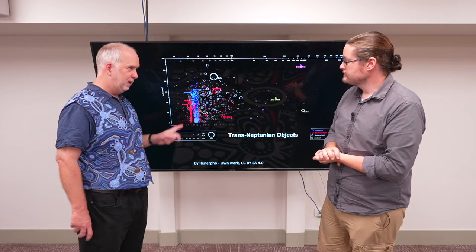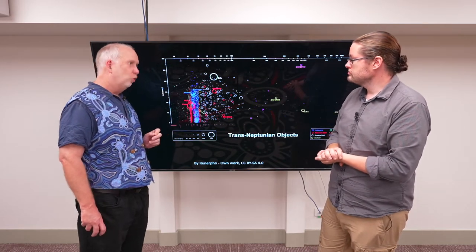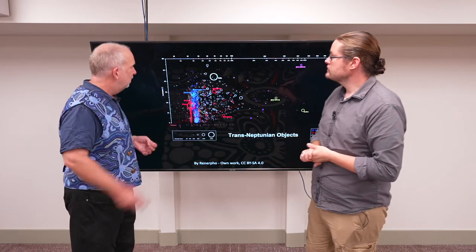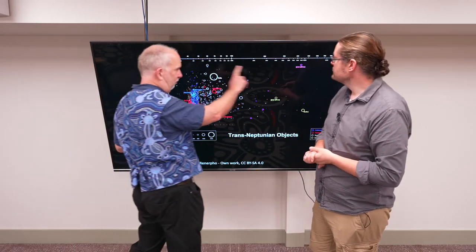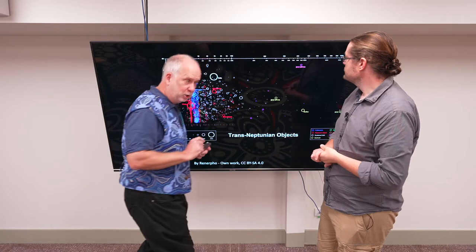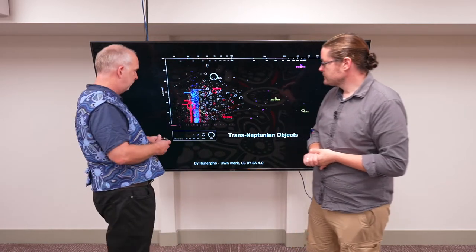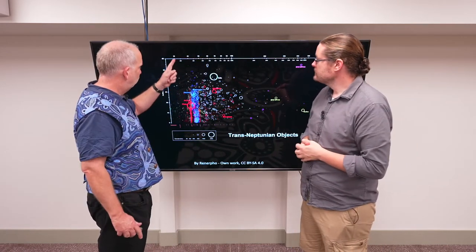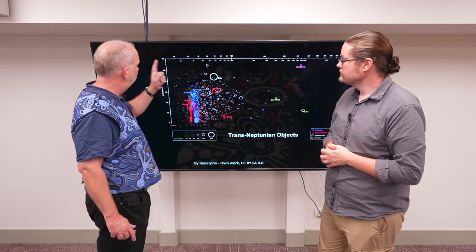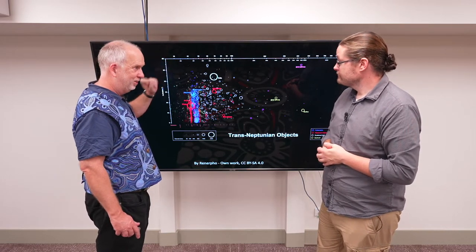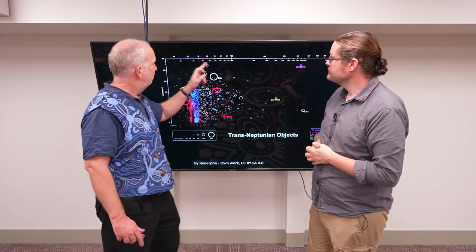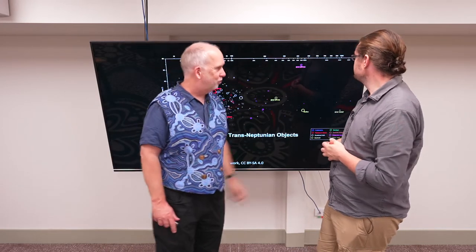Each circle here is a currently known Kuiper belt object, trans-Neptunian object. On this axis we're plotting how far out they are from the Sun, the semi-major axis, which is the average distance from the Sun. This is 30 astronomical units, so that's where Neptune is. 20 down here would be where Uranus is. And then it goes 40, 50, 100, 200, 300, 400, and so on out there.